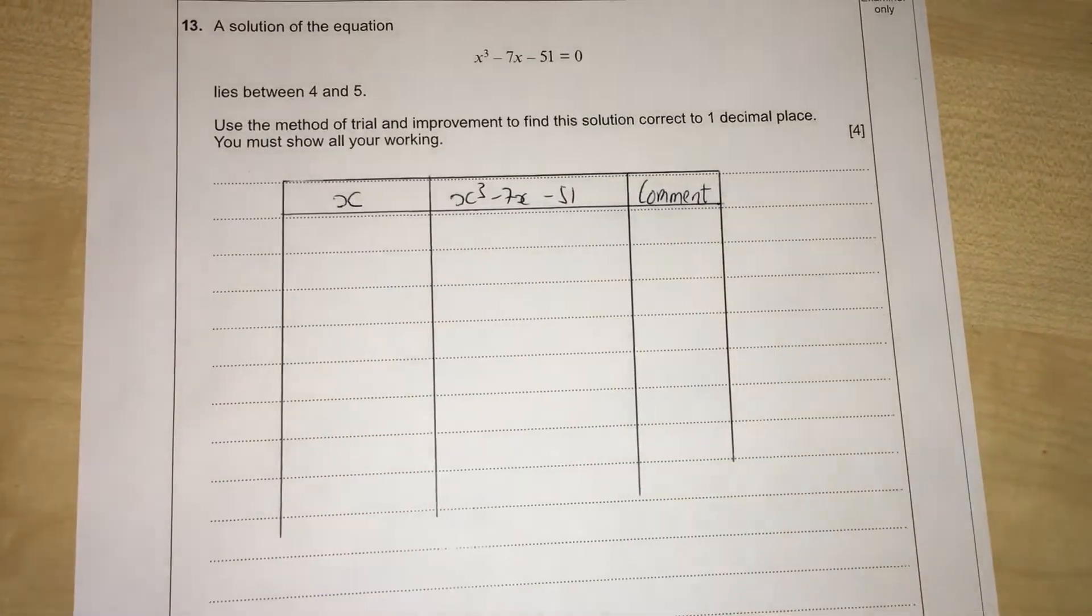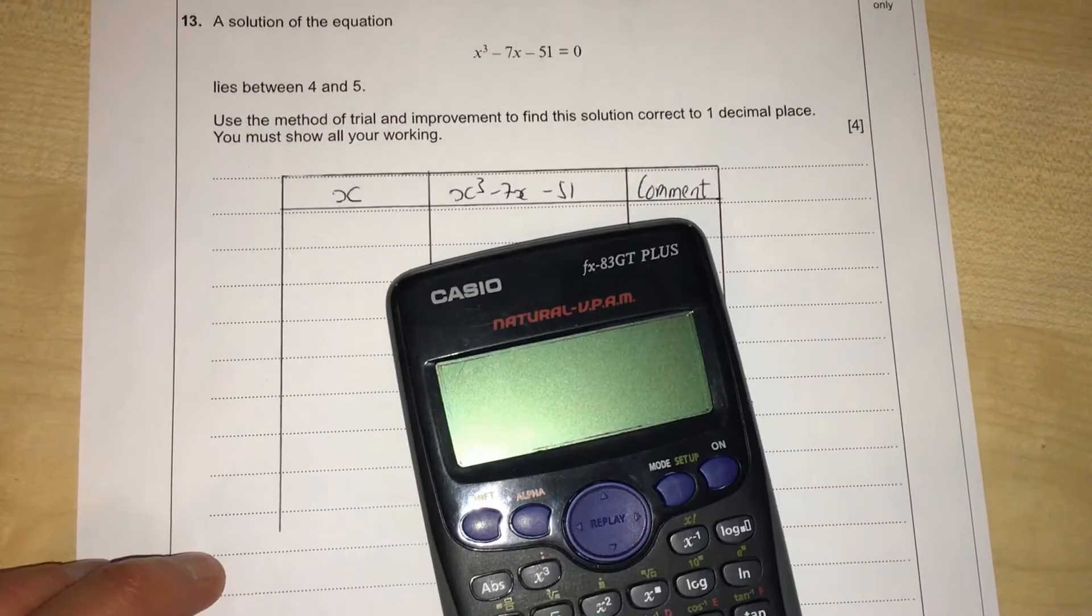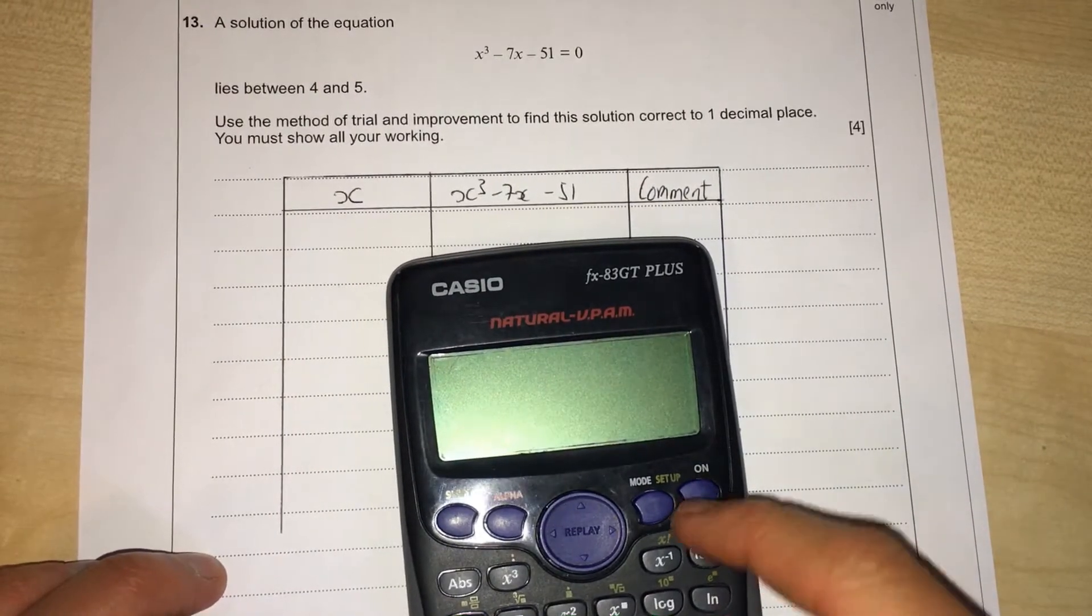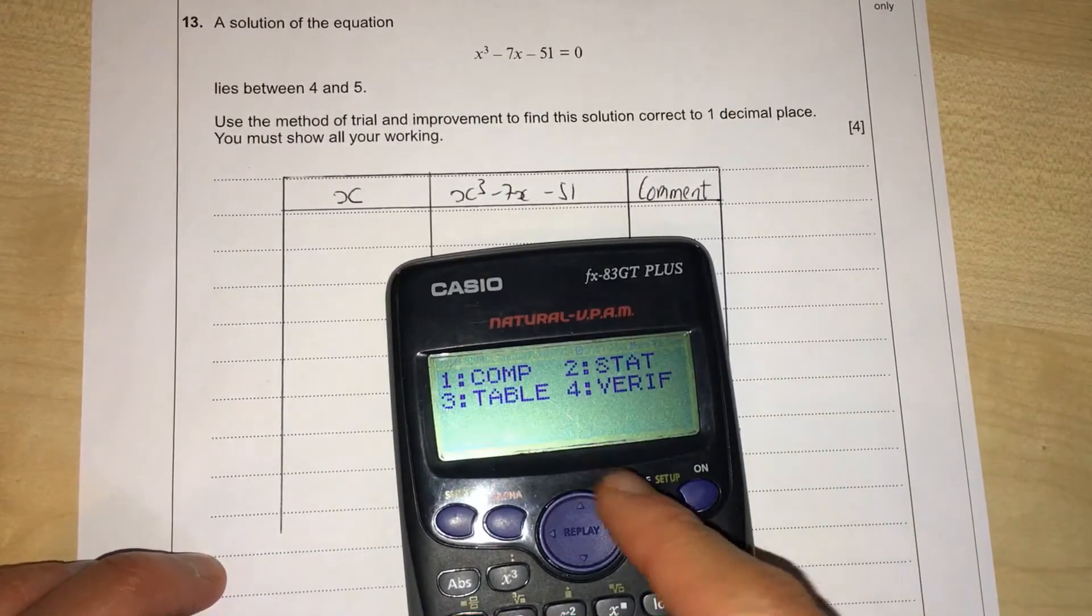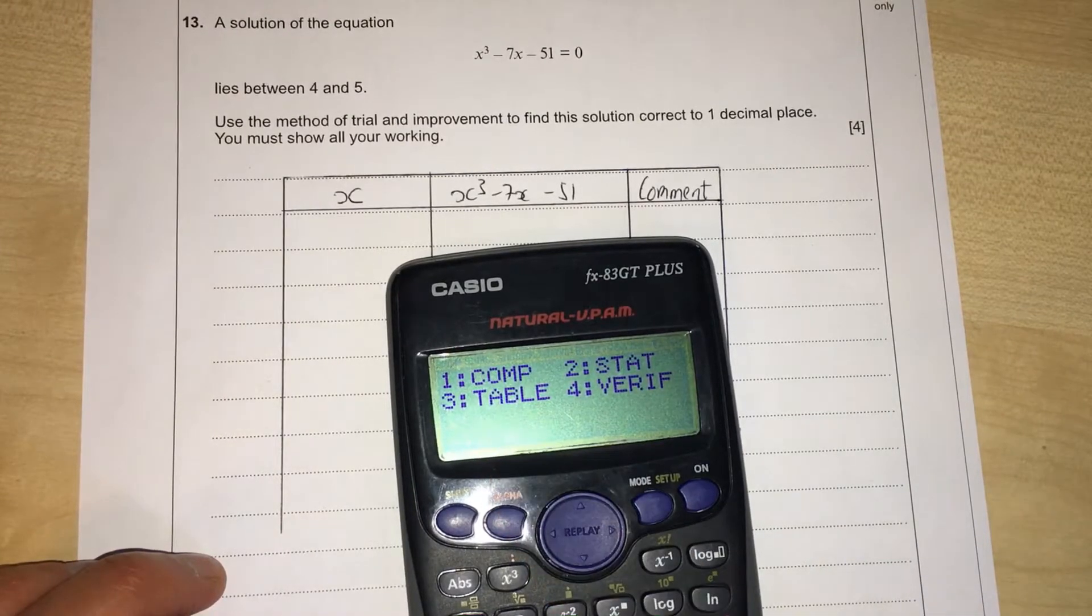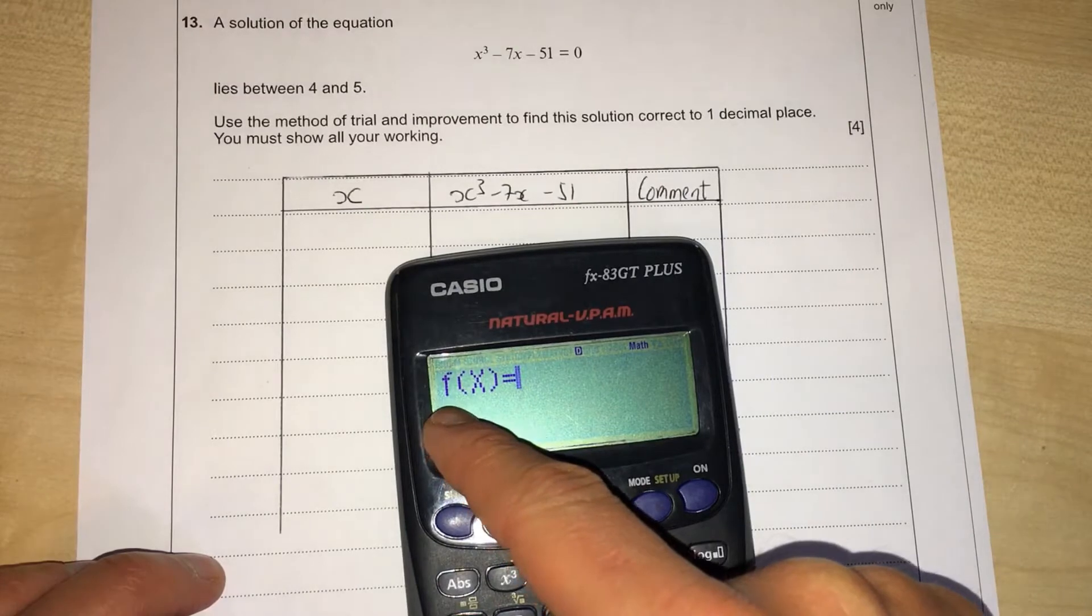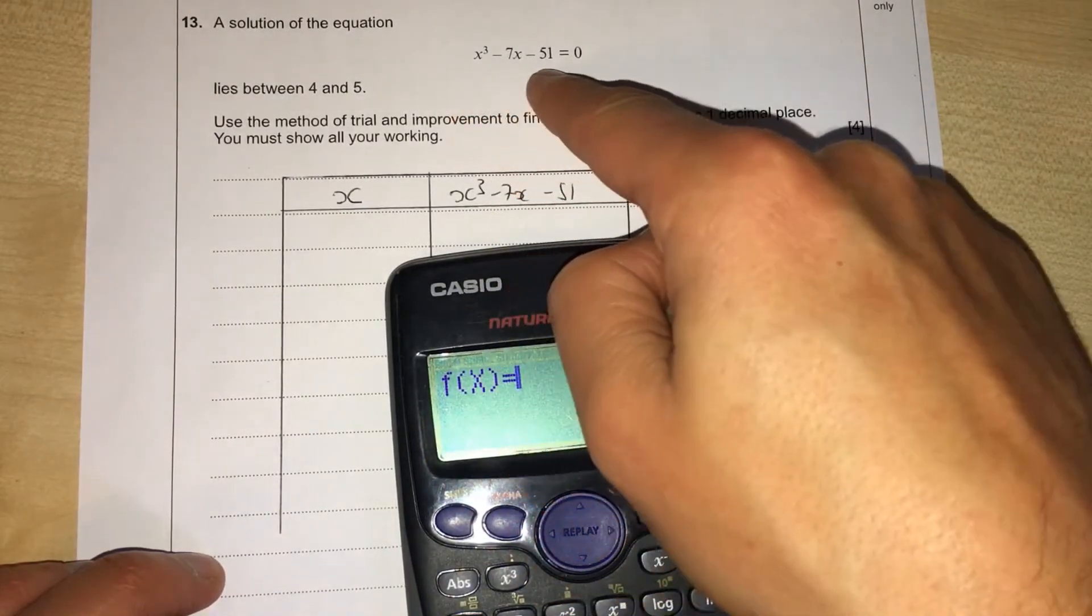I'm going to use a Casio. This is a great calculator hack. You turn it on and then we go to mode and we want table, so we press number 3. Now it tells us f(X), which means a function of X, and we're going to write this in here: X³ - 7X - 51.